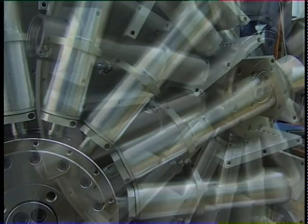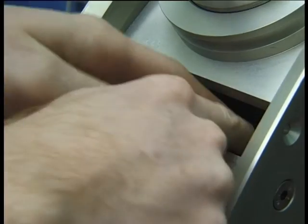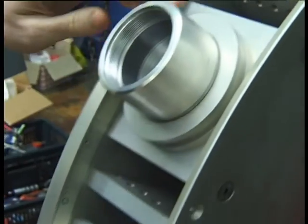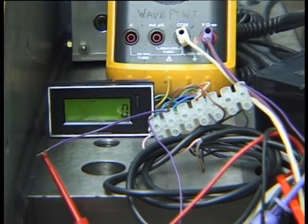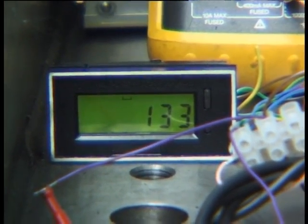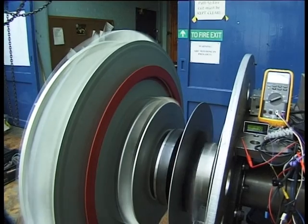For the first spin tests, we fitted temporary dummy spars in place of the turbine blades. These screws and washers are correction weights for the out-of-balance forces on the turbine hub. We spun it at around 500 rpm, and measured the vibrations with a sensitive accelerometer.